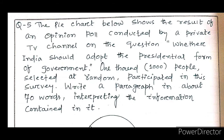The next pie chart below shows the result of an opinion poll conducted by a private TV channel on the question whether India should adopt the presidential form of government. 1000 people selected at random participated in this survey. Write a paragraph in about 70 words interpreting the information contained in it. The pie chart shows the result of this opinion poll.